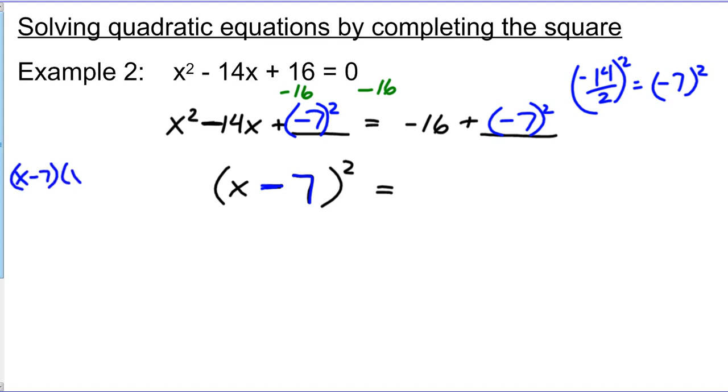x minus 7 times x minus 7. And if you multiply those out, use the box method, FOIL, whatever you want to think of it as, you're going to end up with the trinomial x squared minus 14x plus 49 because we really have 49. On the right-hand side, simplifying that, I've got negative 16. We said this is a 49 plus 49, and let's go ahead and simplify that even further. I'm getting 33 when I do 49 minus 16.